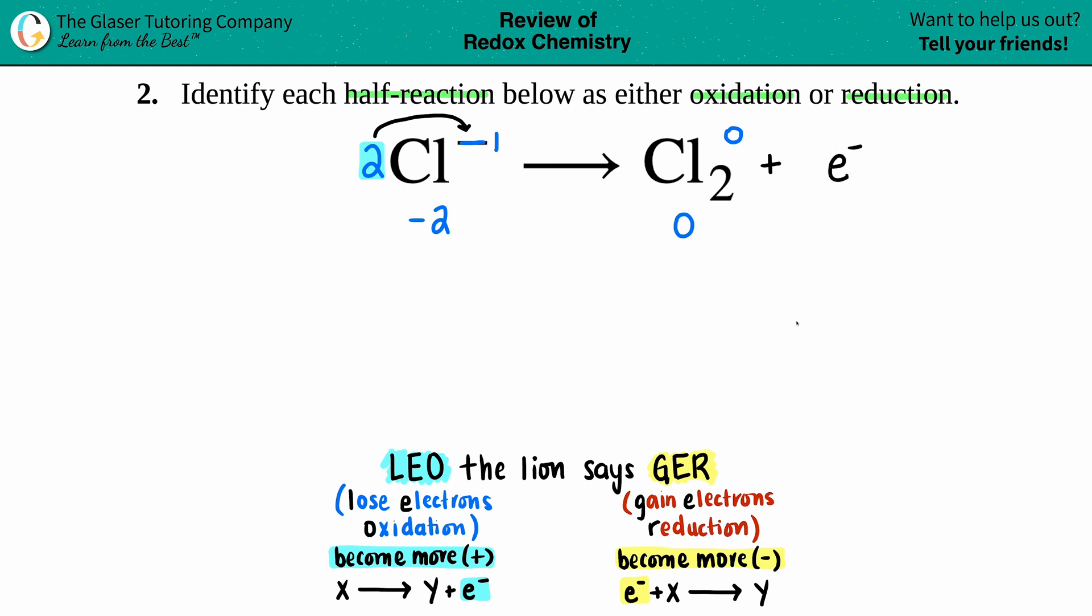But just to make it more practice, how many numbers is it from zero to negative two? Well, zero to negative two, if I think of a number line, I've got to go to negative one and then negative two. So I have to add two electrons.